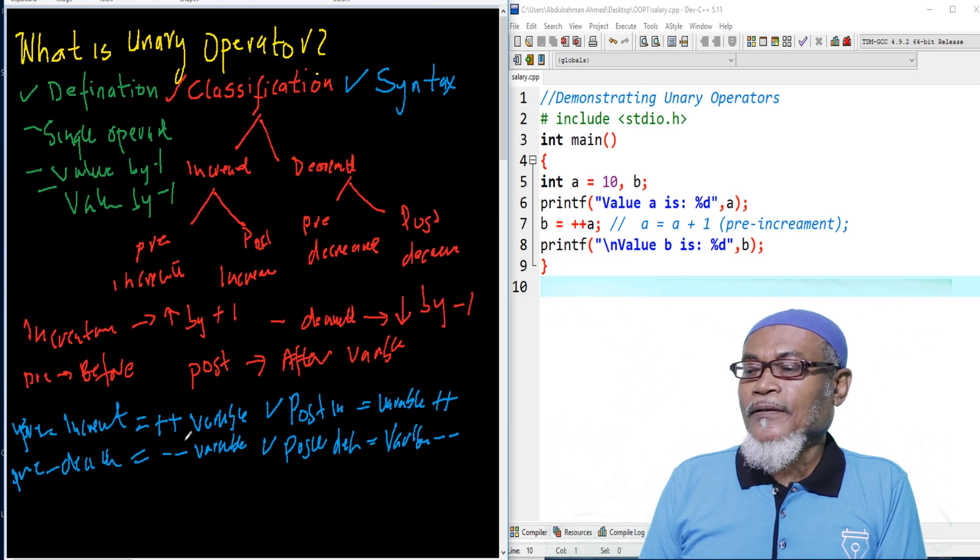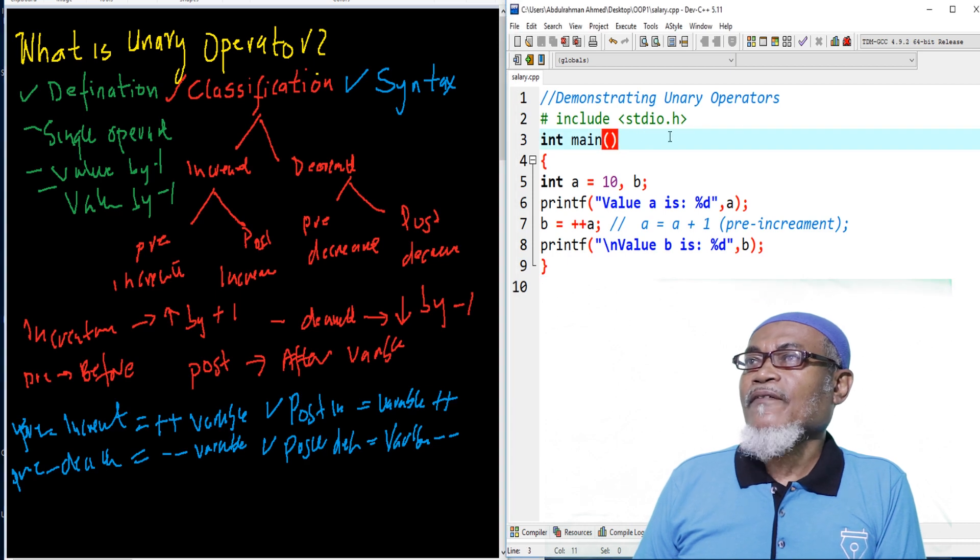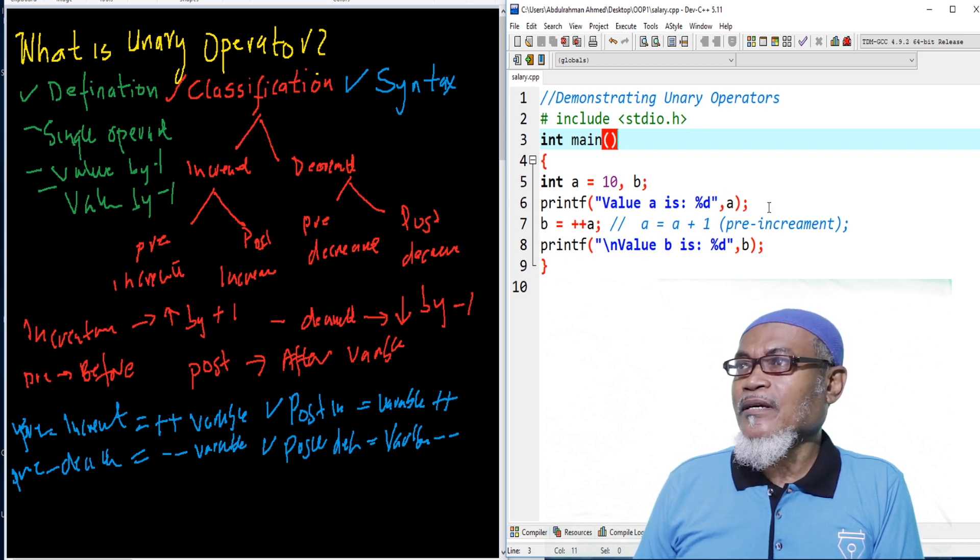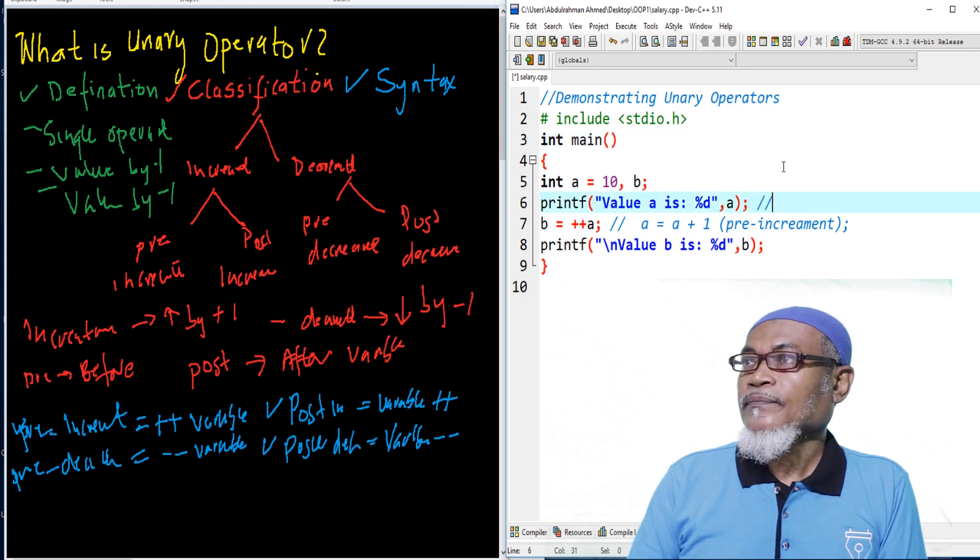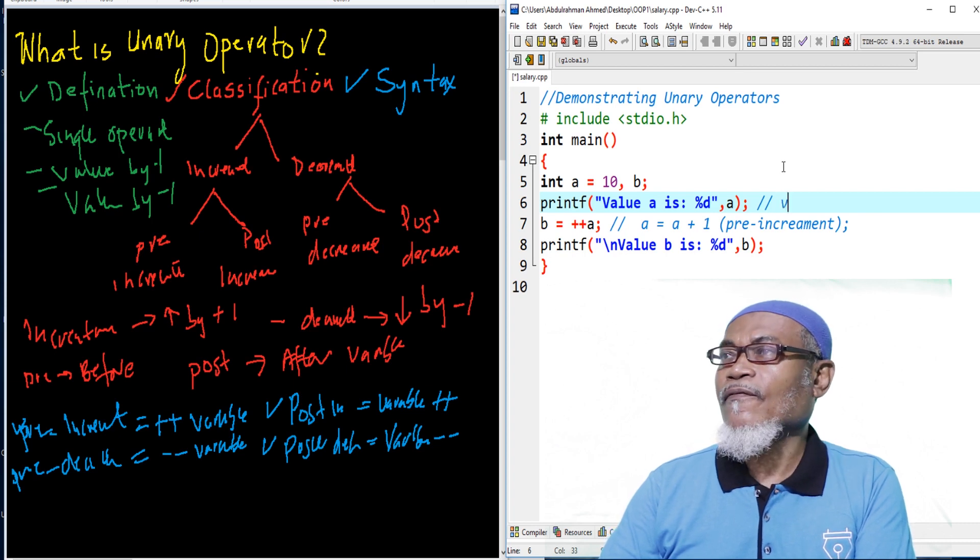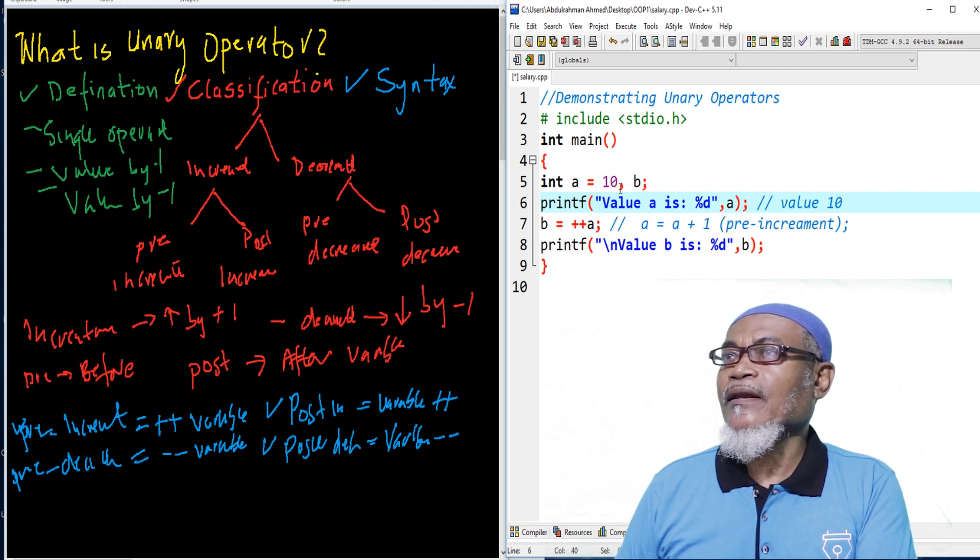So, let's go now back and see how we can implement this one in DevC++. So basically, here, we are declaring two variables. One, we are assigning a value of 10. Another, there is no value. And then, we are printing the value of A. We expect here to get our answer to become 10. So, our value here should be given as 10, because we have assigned 10 into memory allocation.